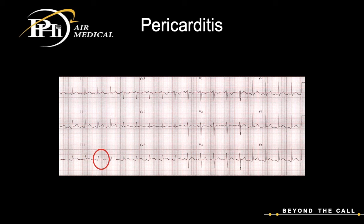If ST elevation is horizontal or convex — meaning tombstone — that is a STEMI. But if we're looking at pericarditis or benign early repolarization, we do tend to see concave ST elevation — like a U shape that would hold water really well around the J point, as we see in lead 2 on this EKG.